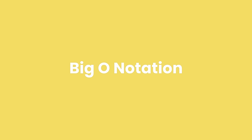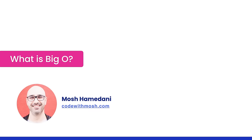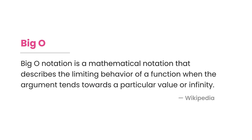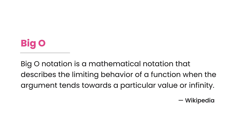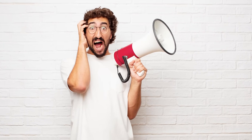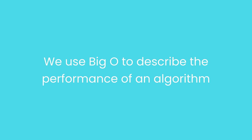Before we talk about data structures and algorithms, we need to talk about big O notation. We use big O notation to describe the performance of an algorithm. A lot of people find big O scary, but the underlying concepts are actually not that hard. We use big O to describe the performance of an algorithm, and this helps us determine if a given algorithm is scalable — basically, will it scale well as the input grows really large? Just because your code executes quickly on your computer doesn't mean it'll perform well with a large data set.